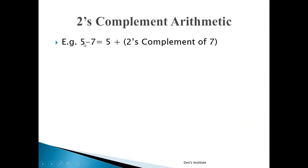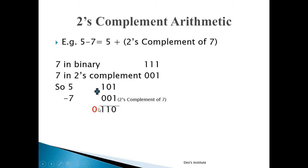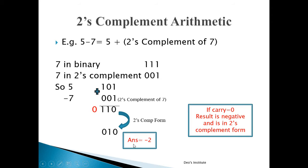Next example: 5 minus 7, computed as 5 plus the 2's complement of 7. Seven in binary is 111; its 2's complement is 001. Five is represented as 101. Adding 101 and 001 gives 110 with carry 0. The second rule: if carry is 0, the result is negative and is in 2's complement form. To get the final result, take the 2's complement of 110, which gives 010, that is 2. Since carry is 0, the result is negative: the answer is −2.